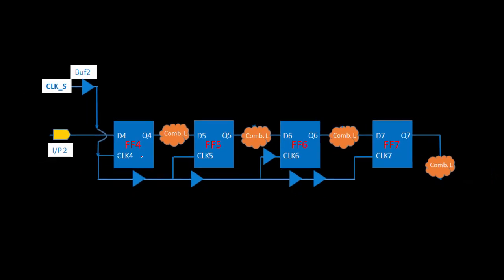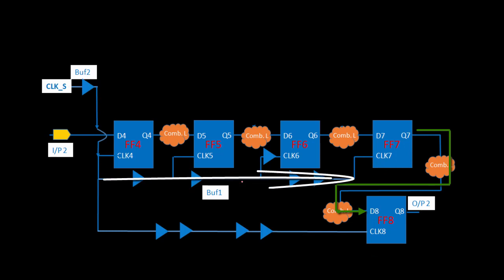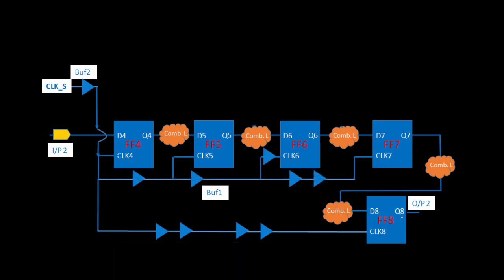Let's move to the next complexity. I have added one more timing path between FF7 and FF8. There is no common clock path between FF7 and FF8 — only this path. Now, if you make any changes in the clock path from clock_s to clock 7, or clock_s to clock 8, it is going to affect our setup or hold violation between FF7 and FF8 — it will affect this particular timing path.